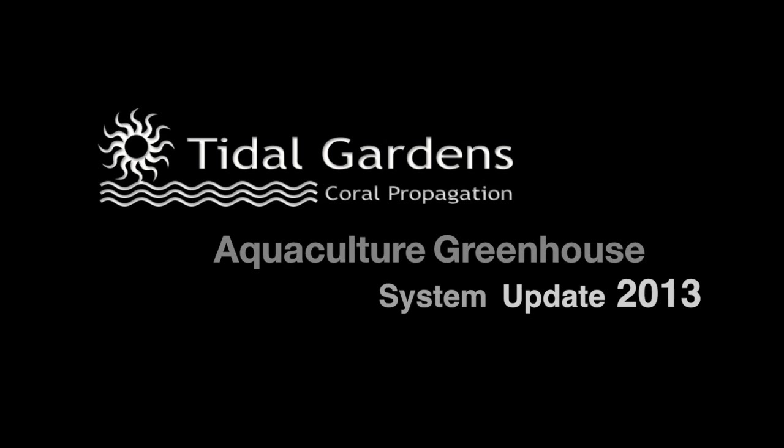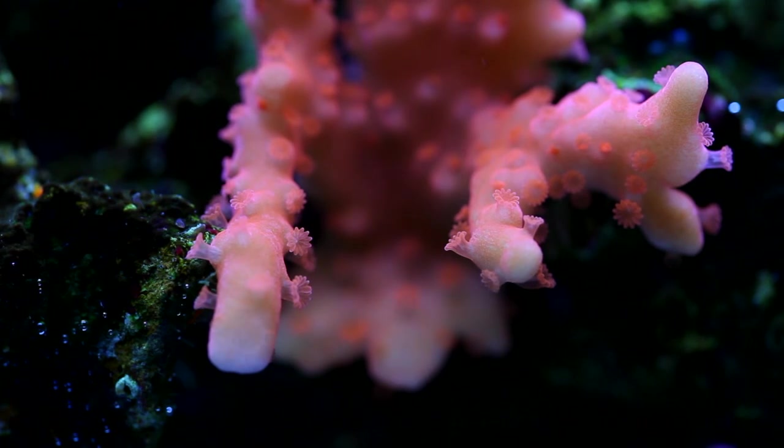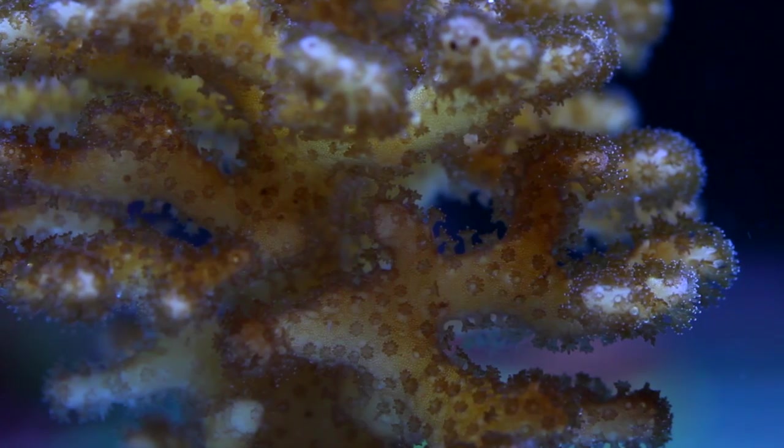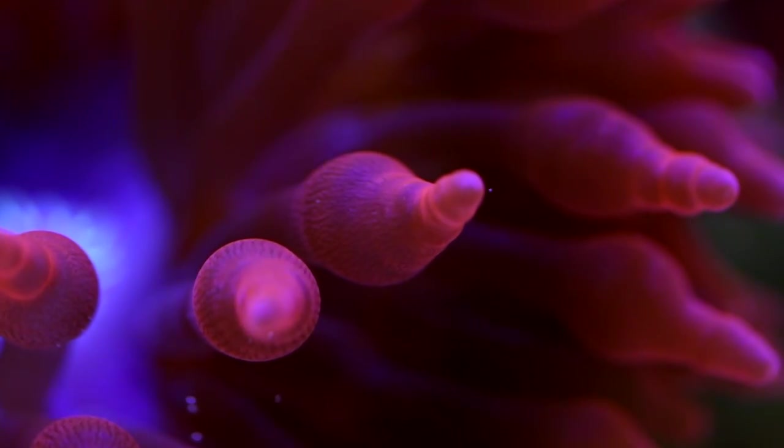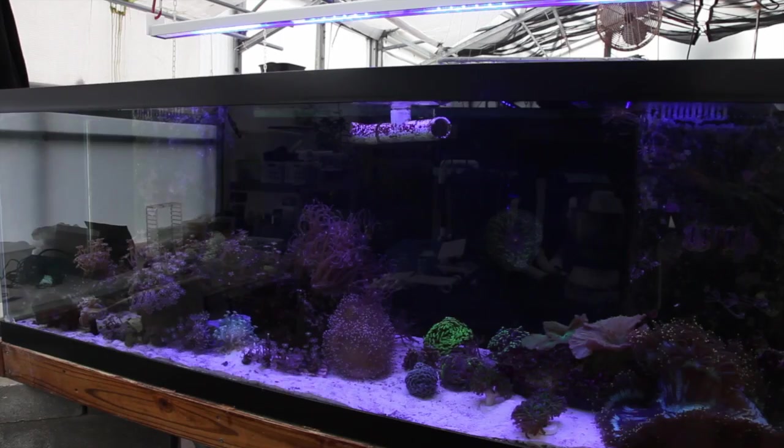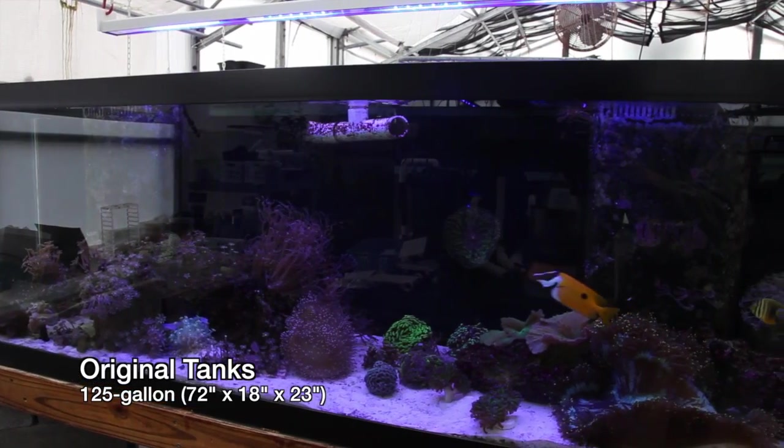This past month we decided to rework one of our oldest systems to make it more functional. The original system was made up of two 300 gallon tubs, a 150 gallon maintenance tub, and two 125 gallon glass aquariums.